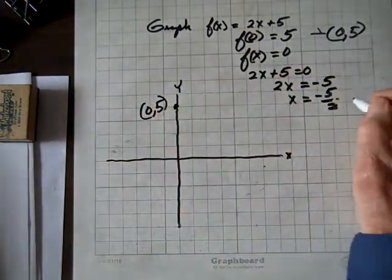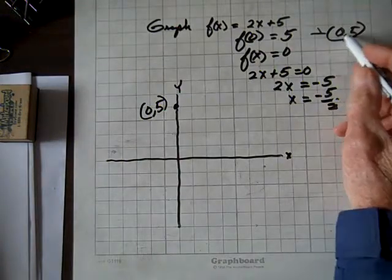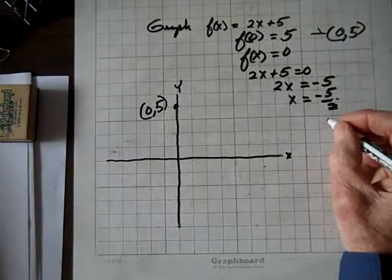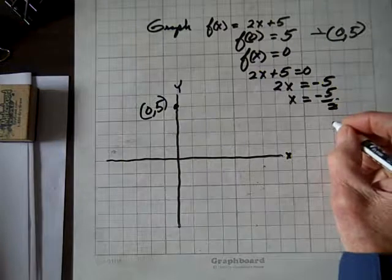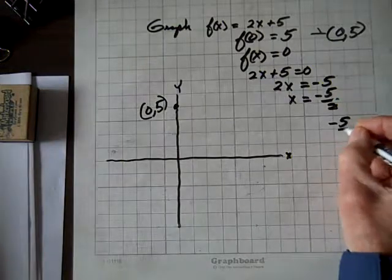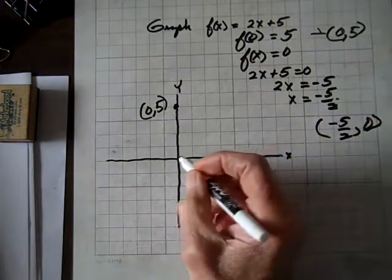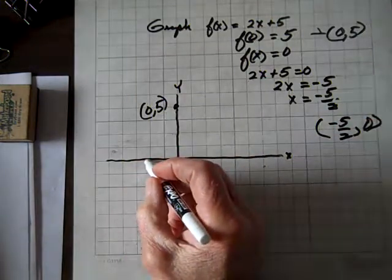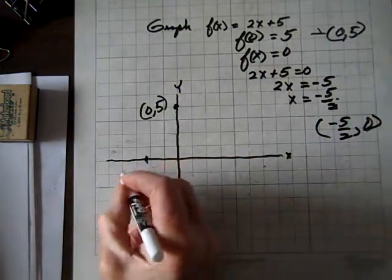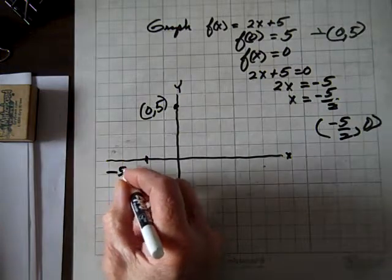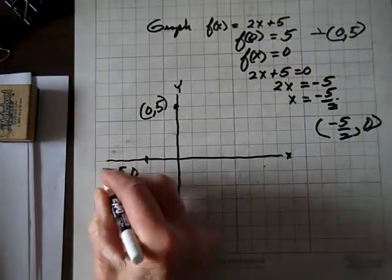That's the y-intercept. For the x-intercept, we're at (-5/2, 0). So we'll go over here to (-5/2, 0).